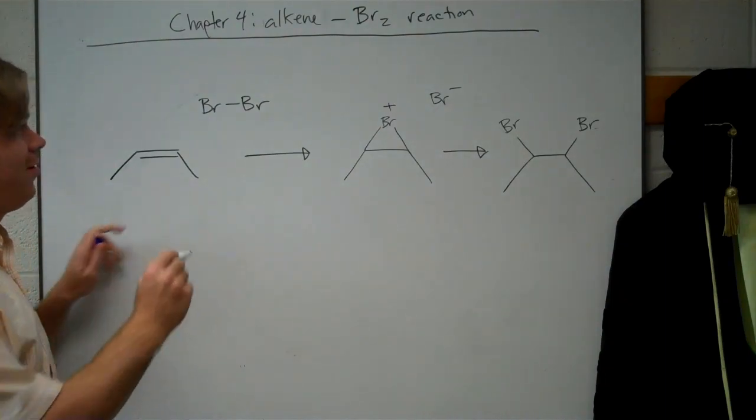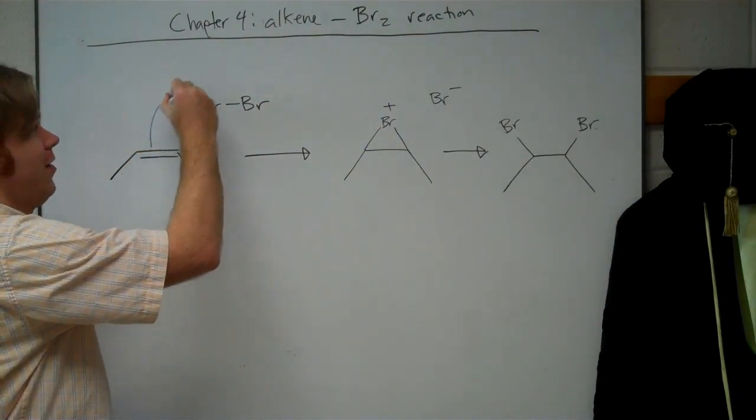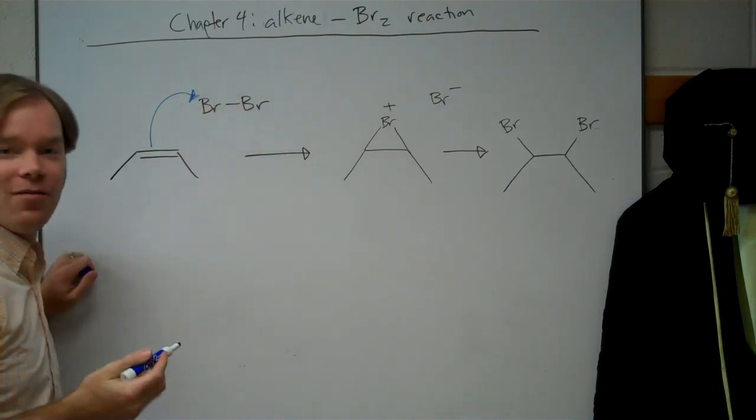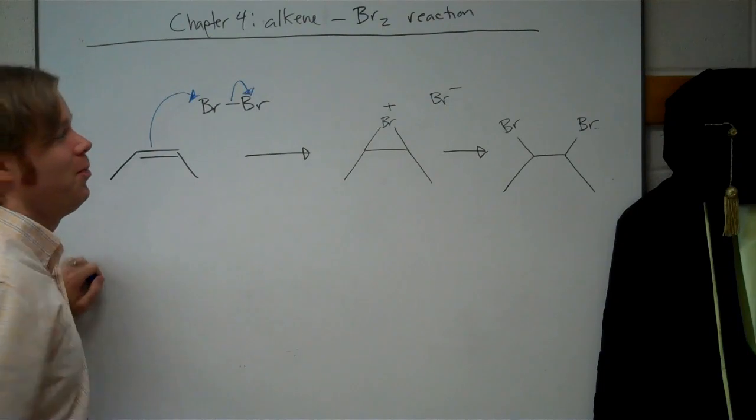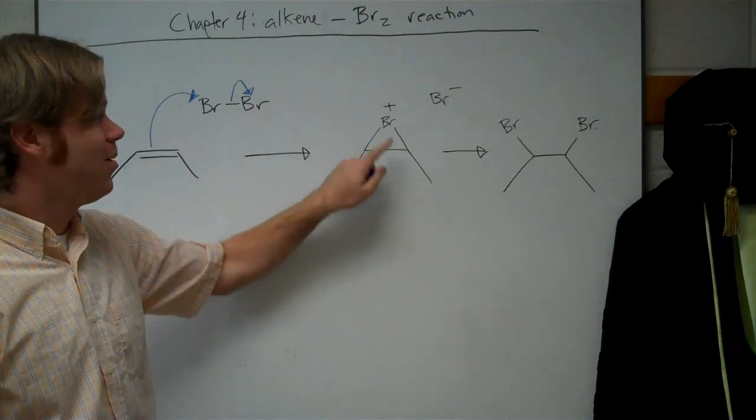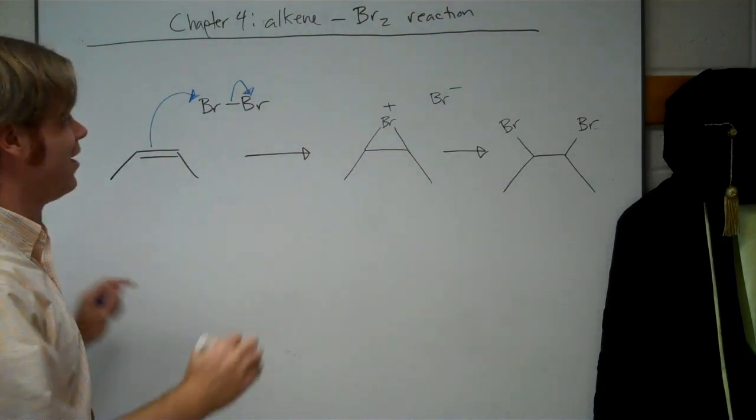So, our double bond is our nucleophile, and it's going to find one of the bromines. Alright, so just as you might expect, this bond breaks. But the intermediate is a little different. It's a three-membered ring with a bromine at the head of it.